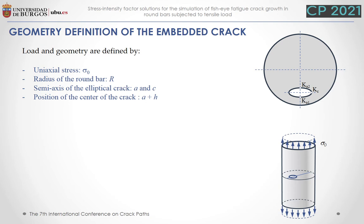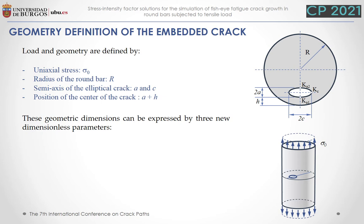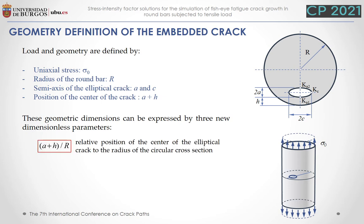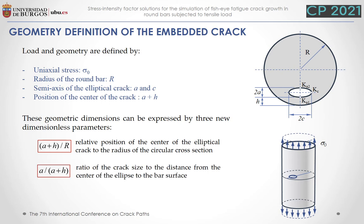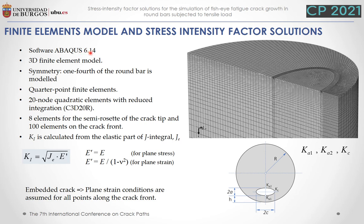The geometry definition of the embedded elliptical crack used in this work is as follows. The load is defined by the uniaxial stress σ₀, the radius of the round bar is R, and the crack is defined by the semi-axes A and C. The position of the center of the crack is defined by the ligament H plus the crack size. These geometric dimensions are expressed by three dimensionless parameters: the relative position of the center of the elliptical crack to the radius, the ratio of crack size to the distance from the crack center to the bar surface, and the crack aspect ratio. A specific 3D finite element model using ABAQUS software was created, with only one-fourth of the round bar modelled due to symmetry, meshed using 20-node quadratic elements with reduced integration.